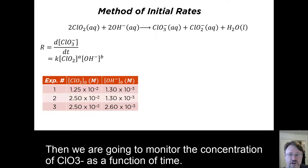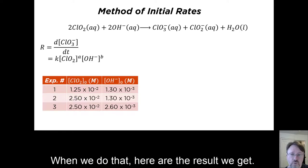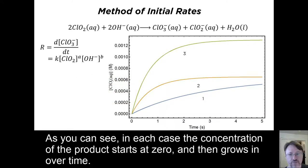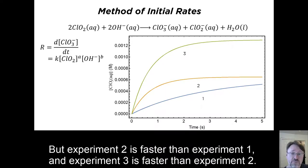Then we are going to monitor the concentration of ClO3 minus as a function of time. When we do that, here are the results we get. As you can see, in each case, the concentration of the product starts at zero and then grows over time. But experiment two is faster than experiment one, and experiment three is faster than experiment two.